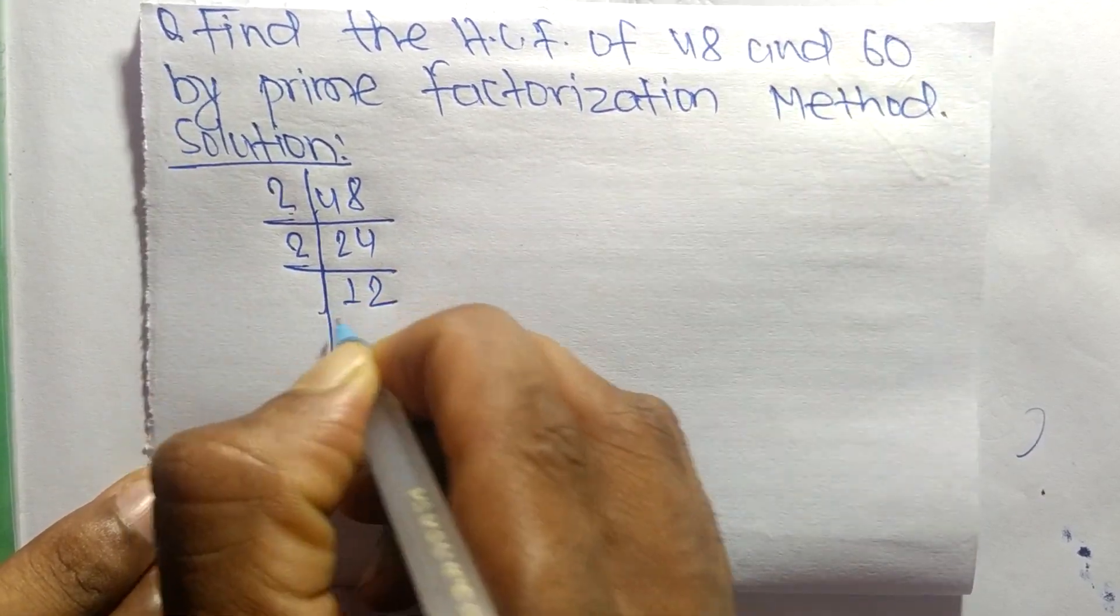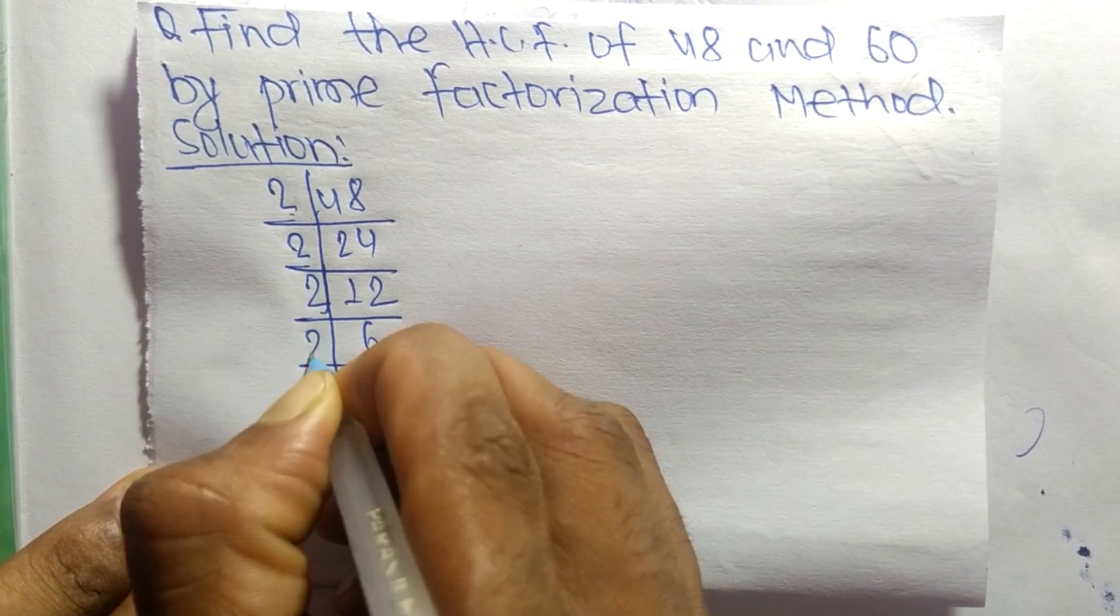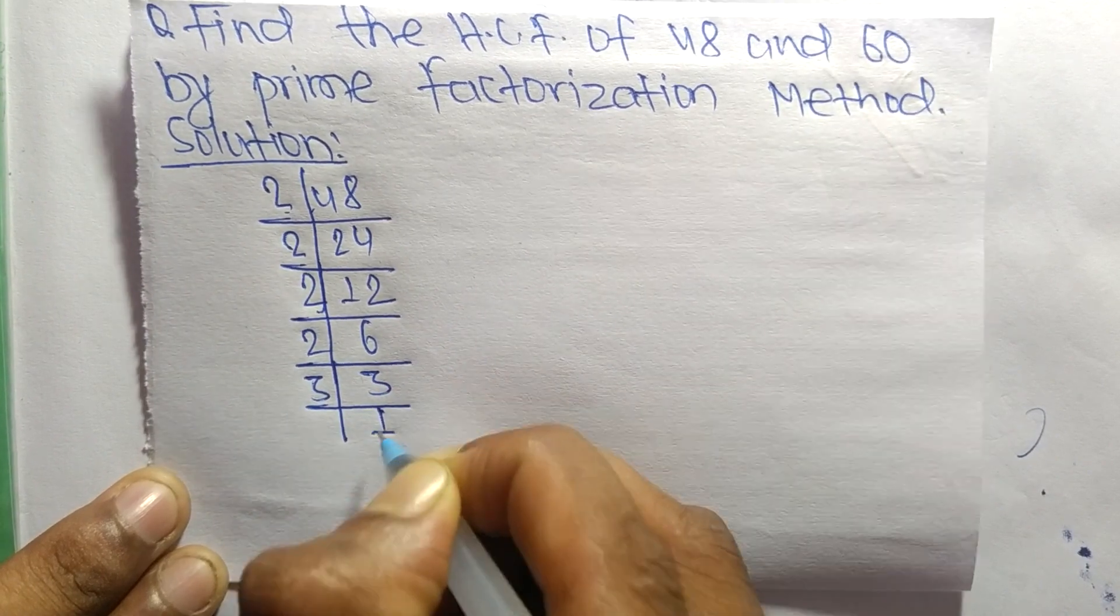Then 2 times 12 equals 24. 2 times 6 equals 12. 2 times 3 equals 6. And 3 times 1 equals 3.